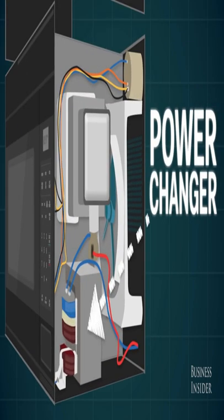It starts with the power changer, which turns the power from the wall into a kind of power that's better for making radio waves.